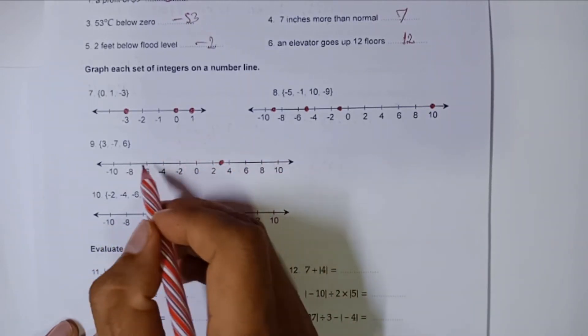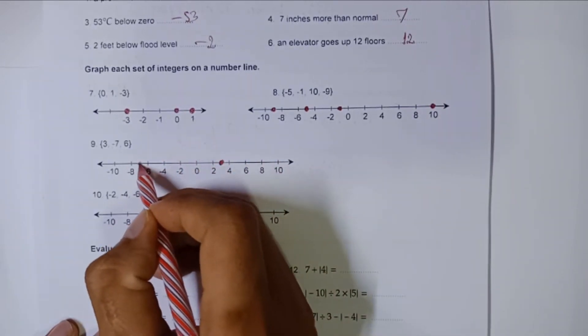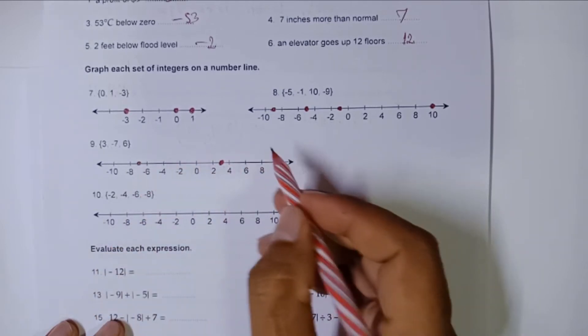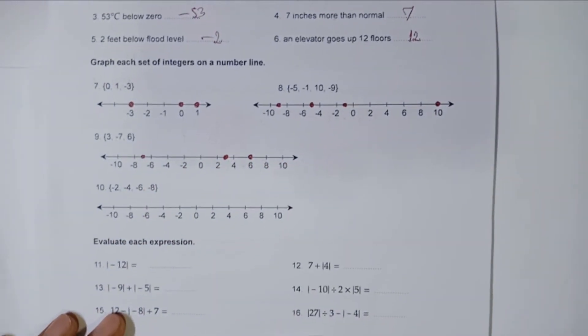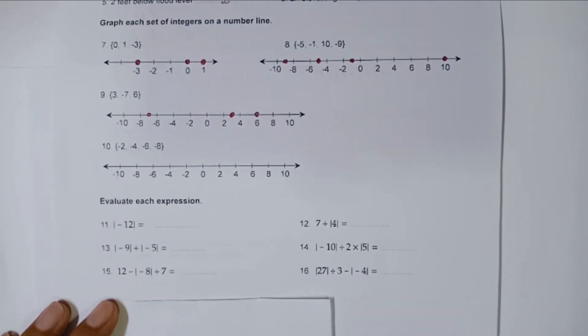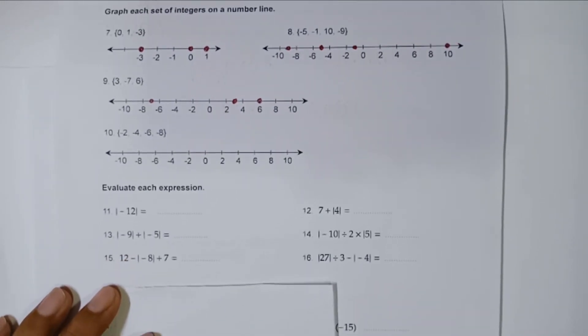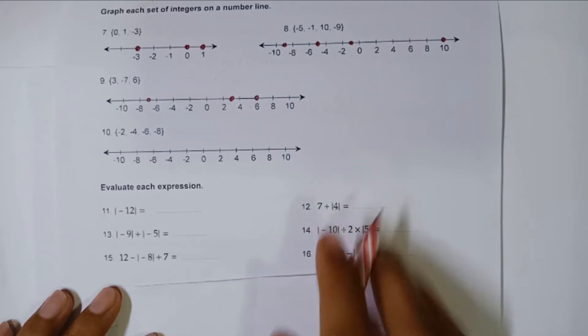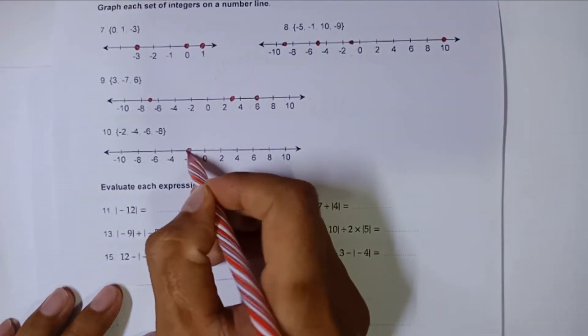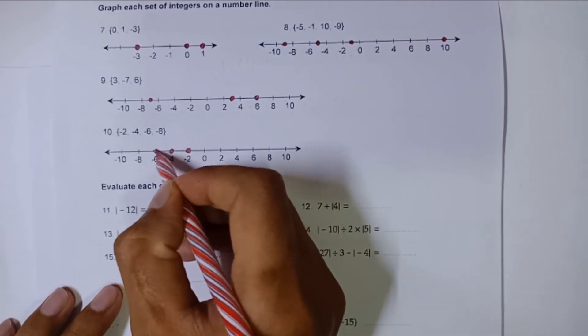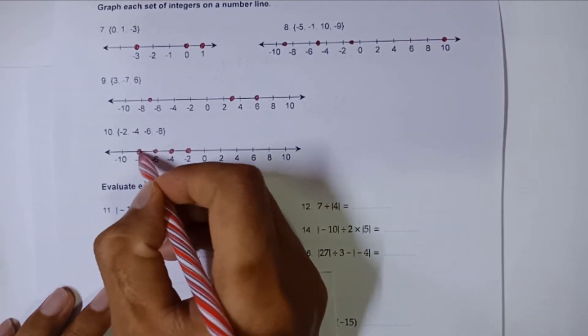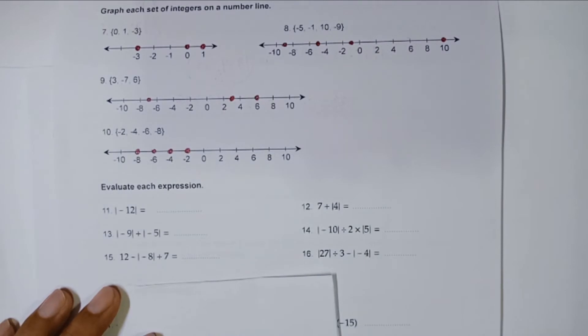And then negative seven in between negative six and negative eight. Then number six: negative two, negative four, negative six, and negative eight. Okay, negative two, four, six, eight.